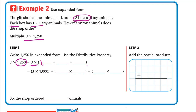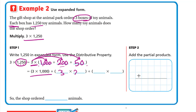The expanded form of 1,250 is: 1 in thousands is 1,000, plus 2 in hundreds is 200, plus 5 in tens is 50. We don't write the zero in ones. So we multiply the 3 by 1,000, then 3 by 200, then 3 by 50: 3 times 1,000, then 3 times 200, then 3 times 50.